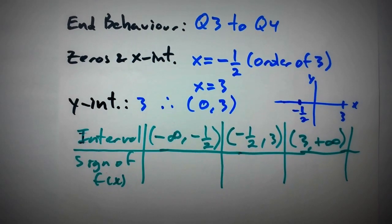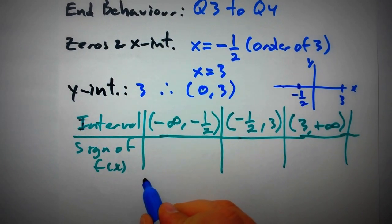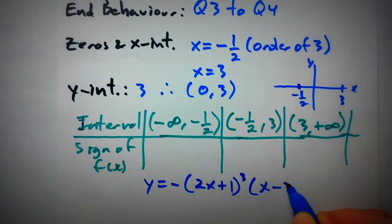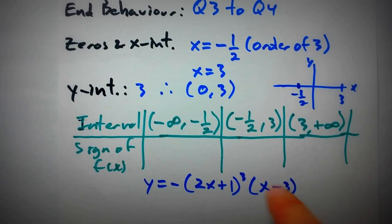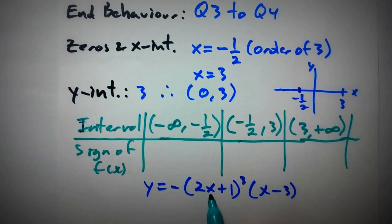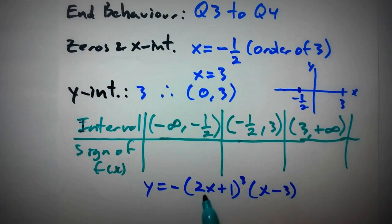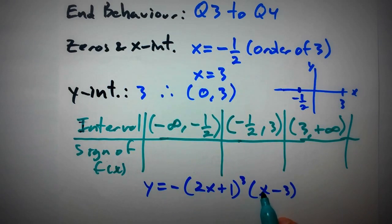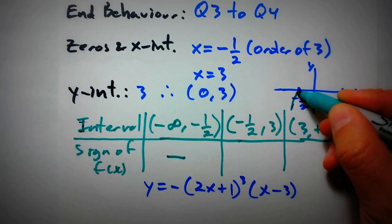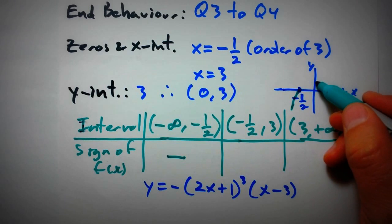Let's write the function for reference: negative (2x plus 1) cubed times (x minus 3). For the interval to the left of negative 1/2, let's test x equals negative 1. We get negative 2 plus 1 equals negative 1, which cubed is still negative. Then negative 1 minus 3 is negative 4, a negative. So we have negative times negative times negative — that's a negative times the outer negative, giving a positive value. The function is positive on this interval.